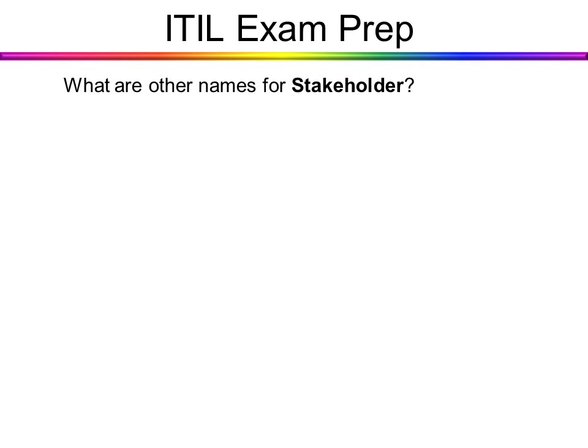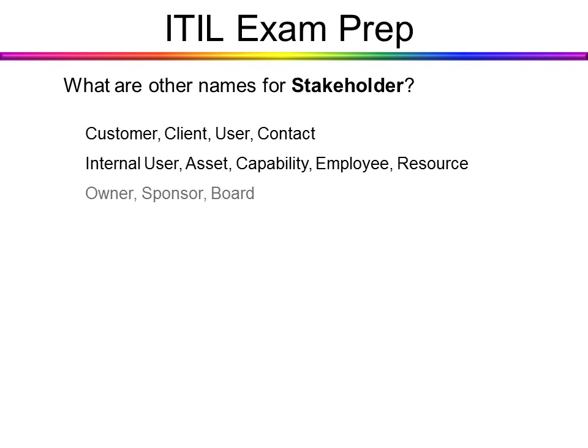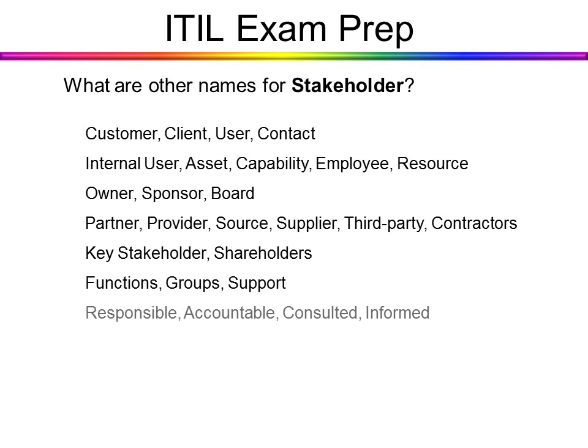What are other names for stakeholder? You'll notice that customer is also known as a stakeholder. Other names include: customer, client, user, contact, internal user, asset, capability, employee, resource, owner, sponsor, board, partner, provider, source, supplier, third party, contractors, key stakeholder, shareholders, functions, groups, support, responsible, accountable, consulted, and informed. These are all different words that could be used on the exam to identify a stakeholder.